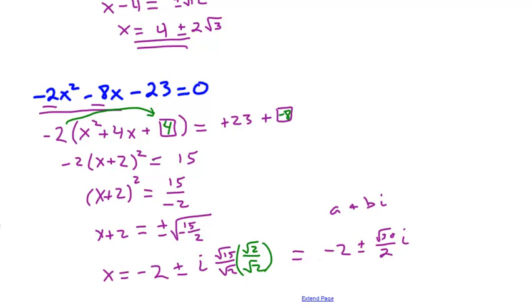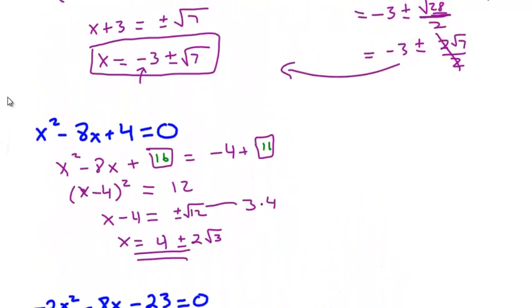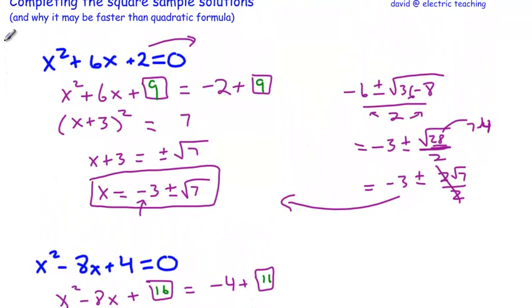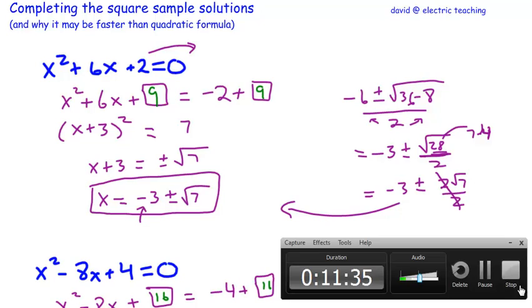Well, I hope you understand that completing the square can really offer you some different solutions to the quadratic formula. Notice I did this one without really the need of a calculator anywhere. And if you were going to multiply out the determinant with this one, which would have been a big negative number, because we would have been 4 times 23 times 2, and really working with big numbers. And so I think completing the square is something that can be used to avoid using the quadratic formula, especially with those big numbers. I'm David from Electric Teaching. I hope that this has helped.